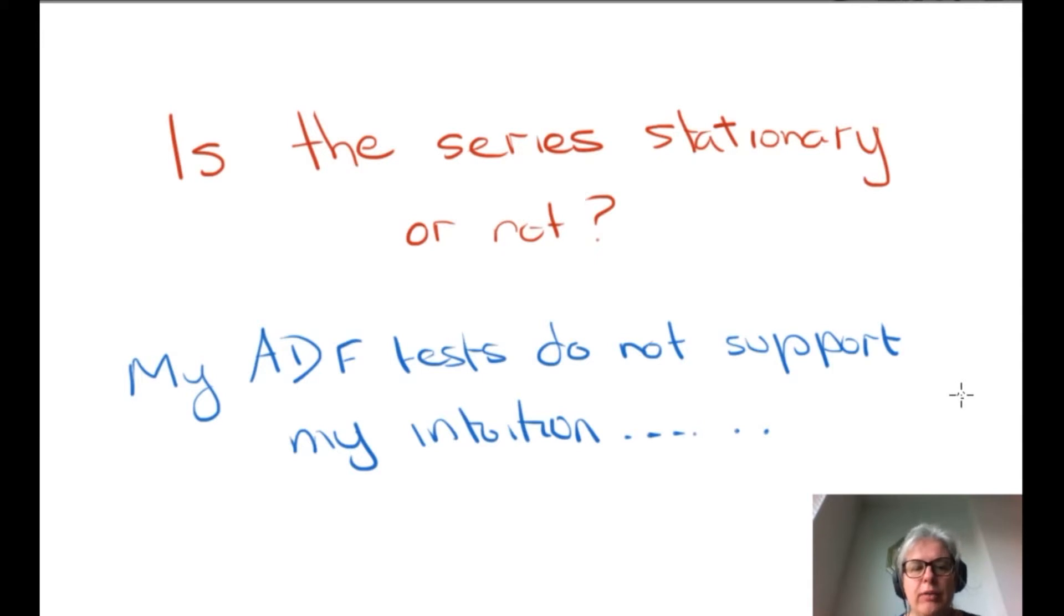A problem we often face is that in our economic intuition, we know that a series should represent some sort of equilibrating relationship, or have a standard mean over time, or have a stable variance. But when we run our ADF tests, we find that this is not supported, or in fact, that it tends to accept the fact that there is an I1 series.